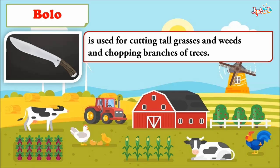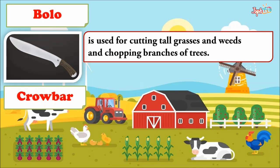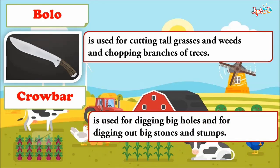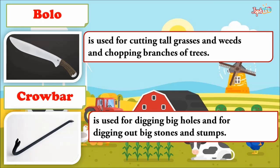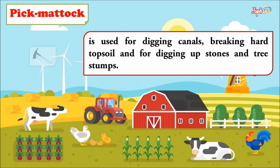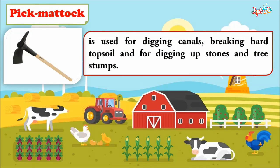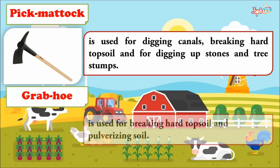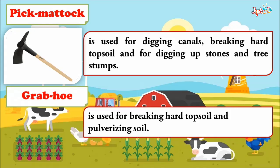The crowbar is used for digging big holes and for digging out big stones and stumps. The pick mattock is used for digging canals, breaking hard topsoil, and for digging up stones and tree stumps. The grab hoe is used for breaking hard topsoil and pulverizing soil.